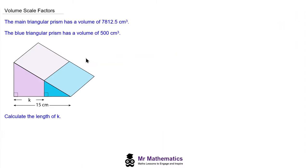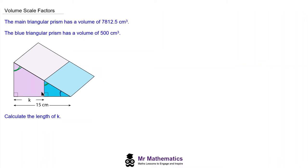Here we have an exam-style question. The main triangular prism has a volume of 7,812.5 centimeters cubed, and the blue triangular prism has a volume of 500 centimeters cubed. We've been asked to work out the length k. First, we need to show that these two triangular prisms are mathematically similar — the cross sections will have the same three angles. They both have a 90-degree angle, both triangles share one angle, and because of angles in parallel lines, the corresponding angles are equal. So both triangles have all three equal angles and must be mathematically similar.